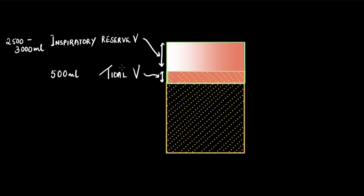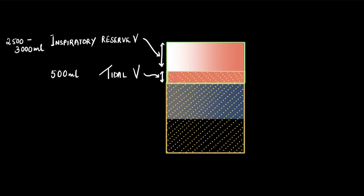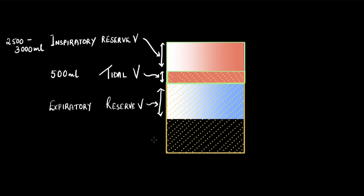All of a sudden Ravi forcefully exhales. Some air from the volume already inside the lungs gets exhaled out, but remember the entire lung will never be empty. The volume forcefully exhaled out is called expiratory reserve volume (ERV), and it is almost equal to around 1,100 to 1,200 ml.